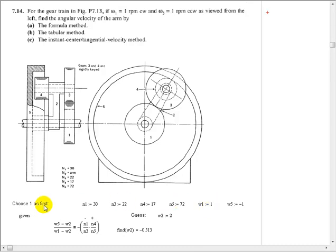So, I'm going to arbitrarily choose gear 1 as the first in our standard equation. That means its omega goes in the bottom. Omega-1 minus omega-arm. Then I'm going to choose 5 as my last one. 1 is the first one. 5 is the last one, so it'll be omega-5 minus omega-arm.